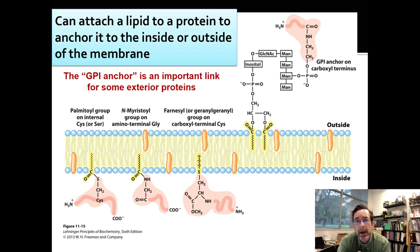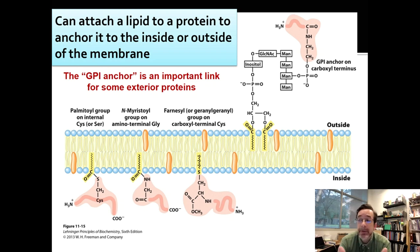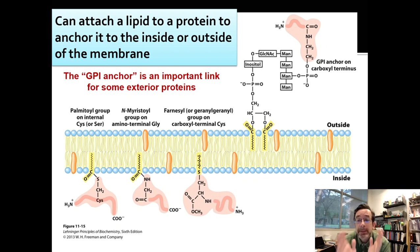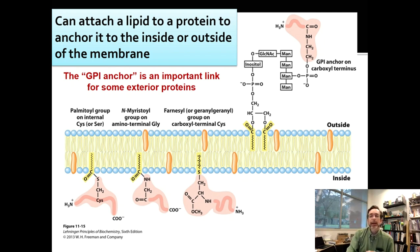GPI anchors are very common and have a particular function in outside signaling, so they're important in immunology. GPI linkers are lipid-based anchors that are outside the cell, and there are particular proteins associated with them. You can break them with a particular kind of enzyme that will cut those bonds in the middle.